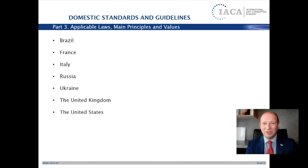Finally, I would suggest you to consider not only special guidance published for companies, but also recommendations and guidelines for prosecutors and investigators. For example, in the United Kingdom and the United States, government authorities publish special guidance for prosecutors and investigators. It is important to read these documents carefully when you design your compliance programs, because in case of corruption, prosecutors and later judges will evaluate your compliance programs based on these special recommendations for prosecutors, investigators, or judges.